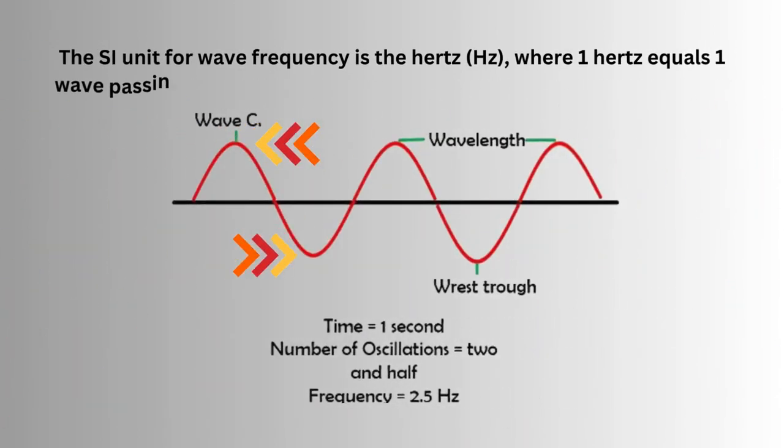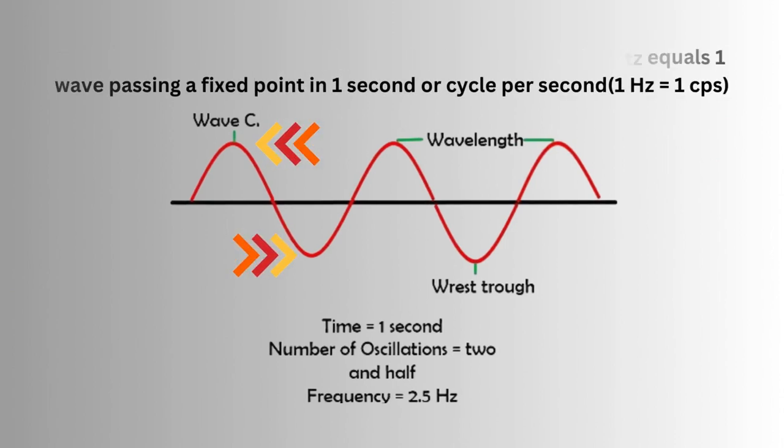The SI unit for wave frequency is the hertz (Hz), where 1 hertz equals one wave passing a fixed point in one second, or cycle per second. 1 hertz equals 1 cps.